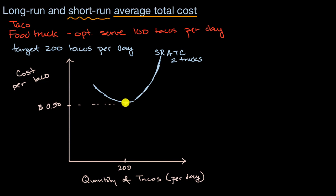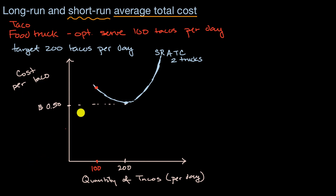What if instead of 200 tacos per day, we only have to produce 100 tacos per day because that's how many people are demanding? If we keep the number of trucks constant and don't change our fixed costs, then our cost per taco is going to be higher — let's say 70 cents per taco.